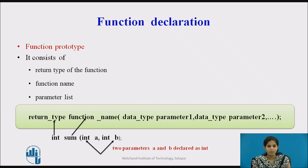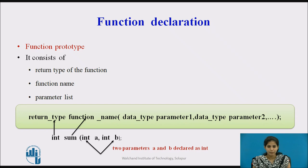The function name is an identifier that specifies the name of the function. The parameter list declares the type and number of arguments that the function expects when it is called. The parameters in the parameter list receive the argument values when the function is called; they are often referred to as formal parameters. A parameter is a variable used to receive data from outside into the function, and a function may or may not have parameters.